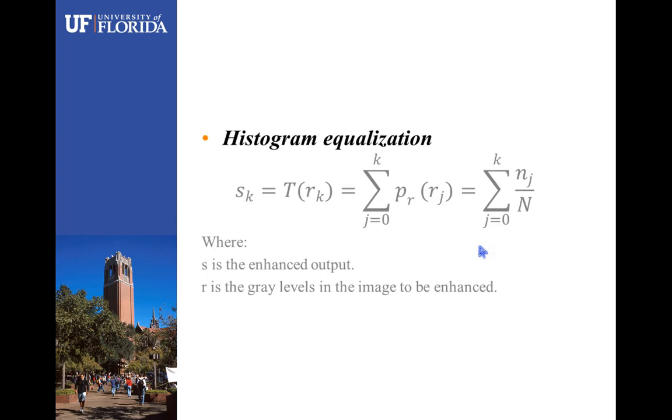Let R represent the gray levels in the image to be enhanced, and S is the enhanced output with transformation of the form sk equals t of rk equals sigma p of rj equals sigma nj over n, where S is no less than zero and no more than one.